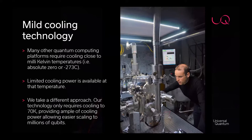The first pillar is mild cooling technology. Most quantum computing platforms require millikelvin temperatures, where very limited cooling power — typically a few milliwatts — restricts how many qubits you can manipulate. We follow a different approach: inherently room temperature for the ions, but we cool the classical electronics to around 70 Kelvin. At that temperature, you have around six orders of magnitude more cooling power than in a dilution refrigerator, which allows you to scale to large numbers.